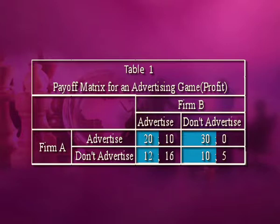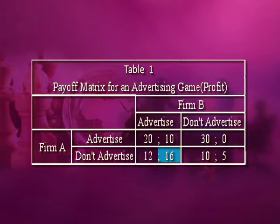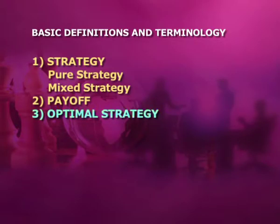In this particular table, the first number in each cell always refers to firm A and the second number always refers to firm B. If firm A advertises but firm B does not, A and B make profits of 12 and 16 respectively. Third is optimal strategy. A course of action or plan which puts the player or firm in the most preferred position irrespective of the strategy of his competitors is called its optimum strategy. Any deviation from it results in a decreased payoff for the player.